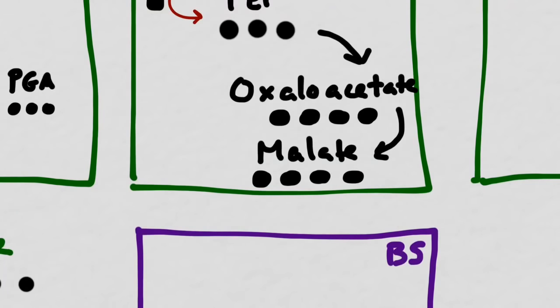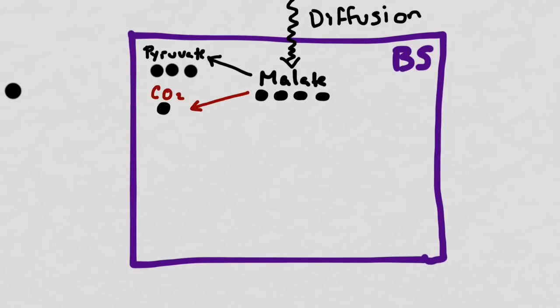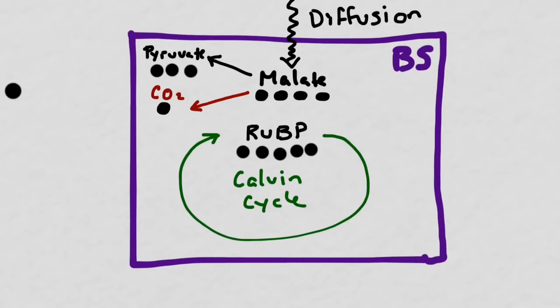Oxaloacetate is then converted into a new four carbon molecule called malate, and malate is actually going to exit this palisade mesophyll cell and diffuse into the bundle sheath cells. Once it's inside the bundle sheath cells, malate will split into two new molecules, pyruvate, which has three carbons, and carbon dioxide, which has one carbon. Waiting right there to pick up that carbon dioxide molecule is our old friend RUBP, which has five carbons. The Calvin cycle can then proceed normally and produce glucose.